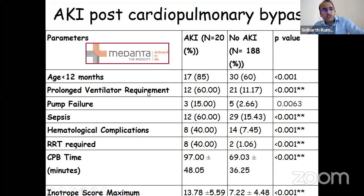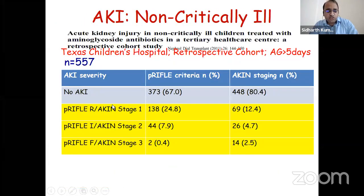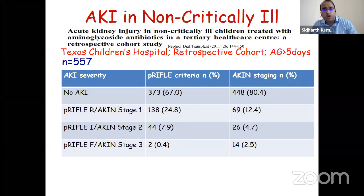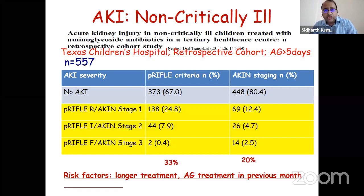Children who get AKI post-bypass tend to be young, require prolonged inotropes, have pump failure, septicemia, and hematological complications, and require RRT. AKI is also common in the wards, in children receiving aminoglycosides—a study from Texas Children's looking at almost 500 children showed AKI risk of 20-30% regardless of definition used. Risk factors include longer aminoglycoside treatment, prior exposure in the last month, and increasing number of nephrotoxins, which causes a stepwise increase in AKI incidence.